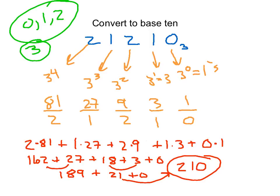When converting from any base to base 10, identify the value of each column based on the base. In base 3, you go up by powers of 3; in base 8, you go from ones to eights to sixty-fours, and so forth. You use digits from zero up to but not including the base number — so in base 3, you use 0, 1, and 2 — and place them in columns to represent different numbers.